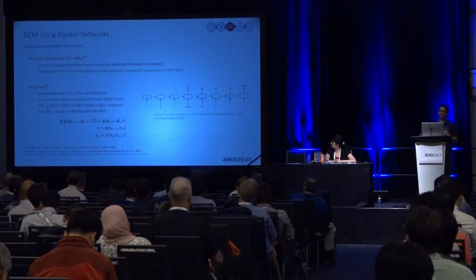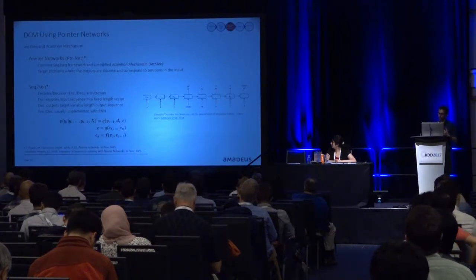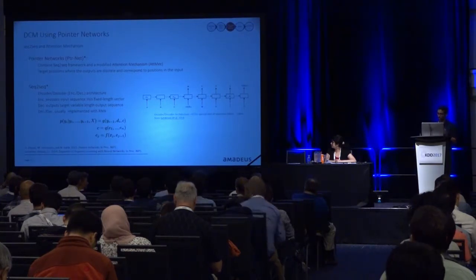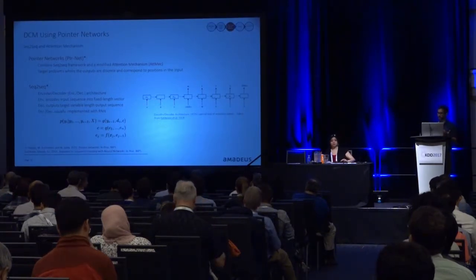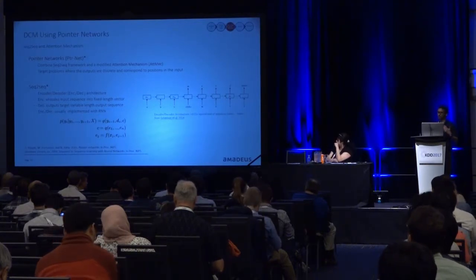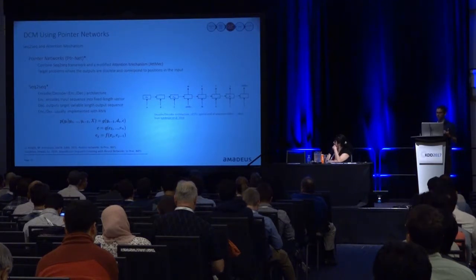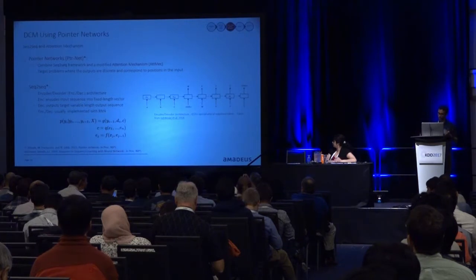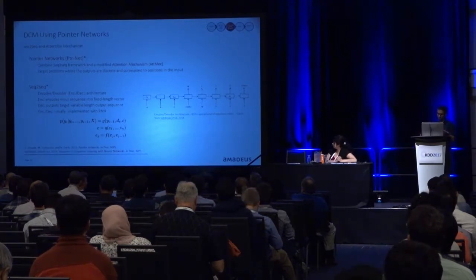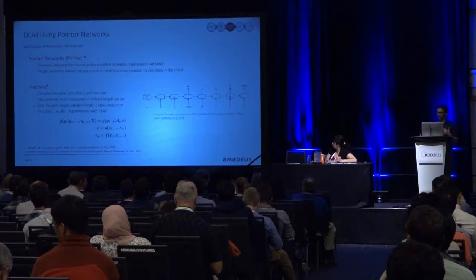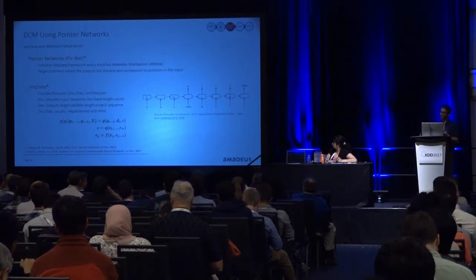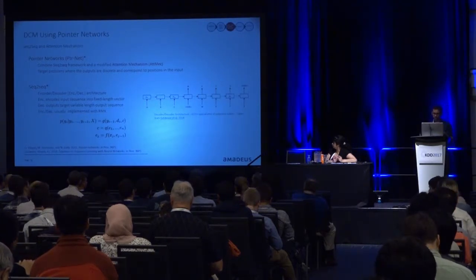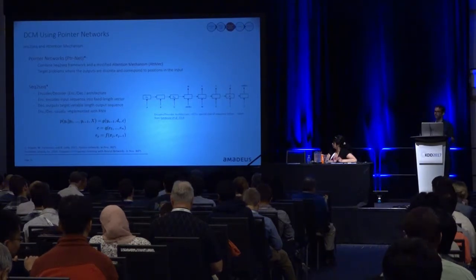The idea is that the encoder receives a sequence, which can be variable length, and embeds it into a fixed-length vector. So the encoder processes inputs A, B, and C. Then the decoder takes this vector and starts producing an output sequence, again variable length. It will write the sequence until the end-of-sequence character is produced, and then the process is over. The G and F in the equations would correspond to, for example, an LSTM or similar RNN cell equations. C here, in the simplest original model, would be equal to the last state of the encoding — that's what the decoder receives at the first time step.